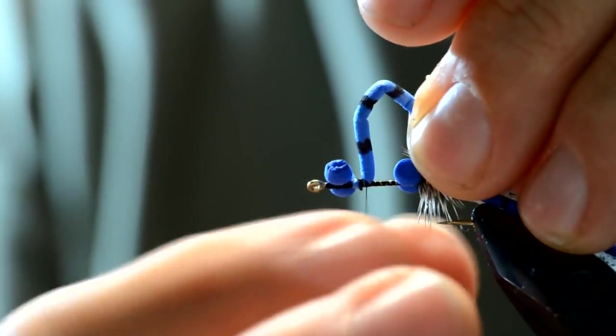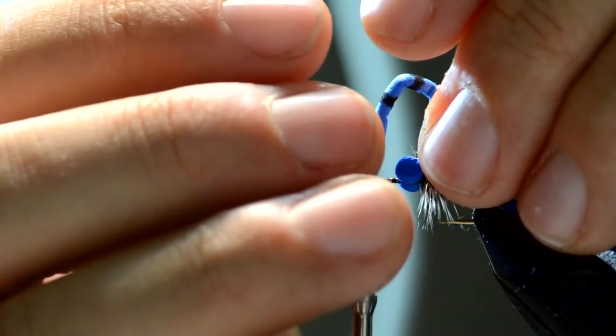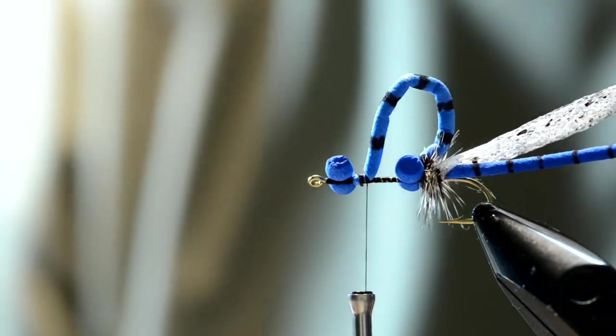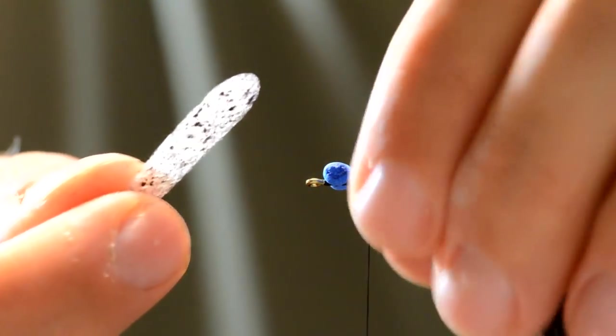You can kind of push up on those first set of eyes to give it a little bit more holding area. And this foam actually works really nicely with super glue. Once we've got that, you want to let it dry for a little bit, a couple seconds, few seconds.